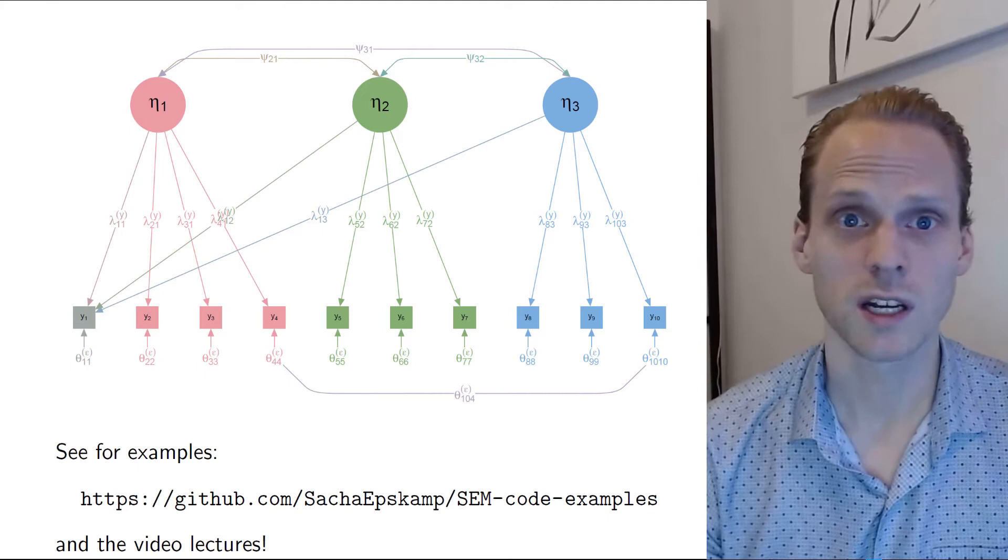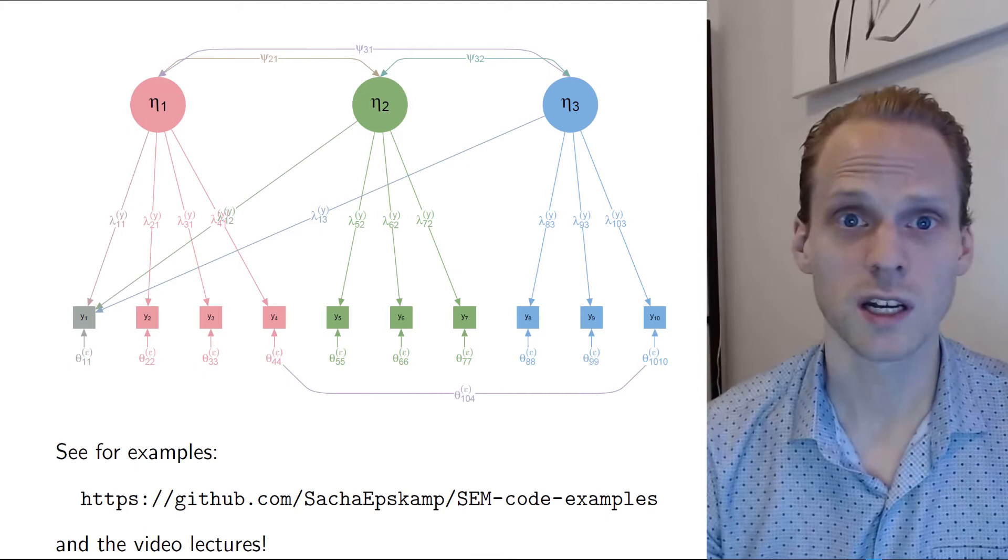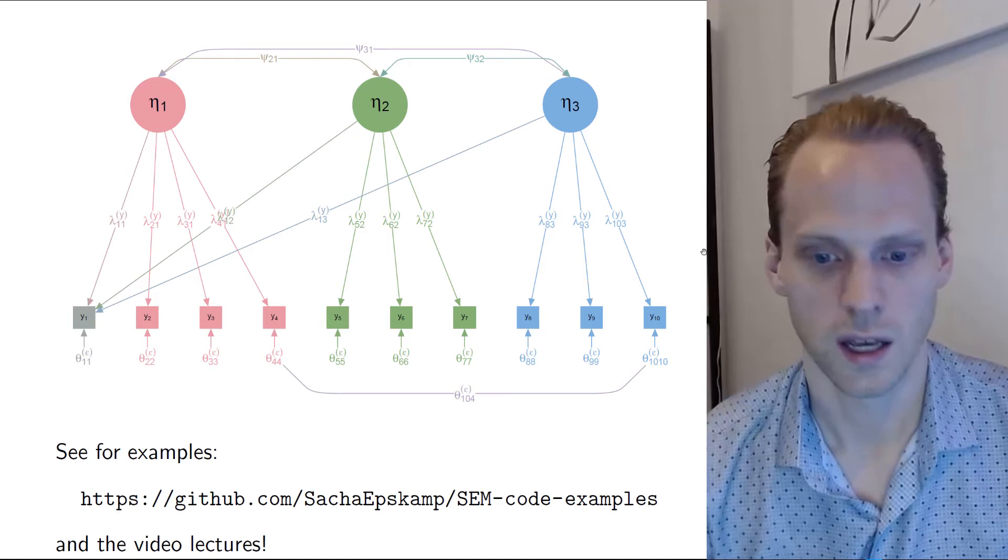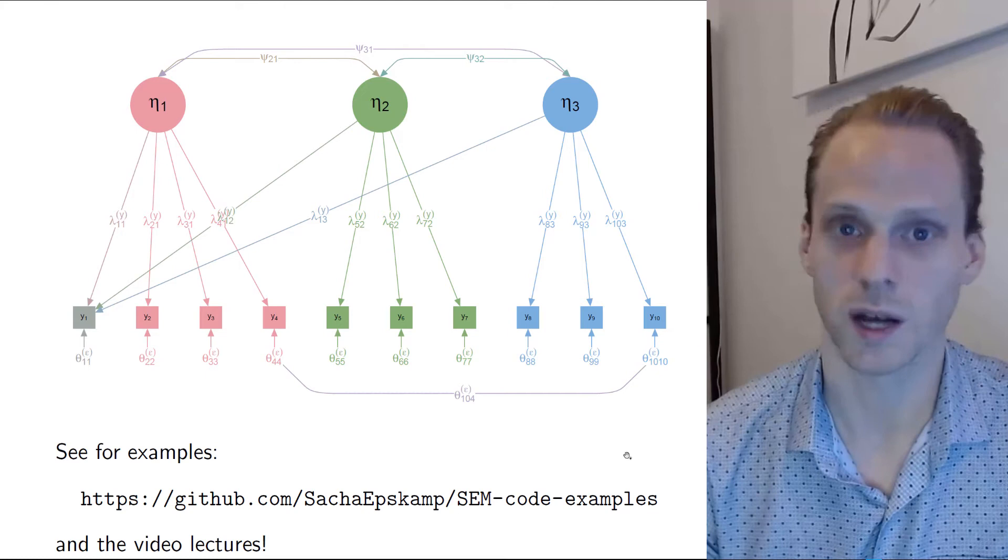So this is what CFA models look like as we saw last week. This path diagram is actually drawn with software called SEMplot that I made quite some time ago. I have some examples on SEMplot on this GitHub page as well as examples on how to fit SEM models and CFA models. CFA is a special case of SEM, right?